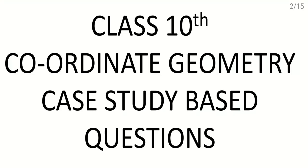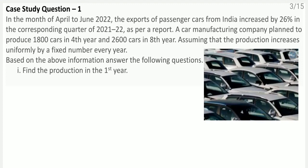Class 10th coordinate geometry case study based questions. Question number one: in the month of April to June 2022, the exports of passenger cars from India increased by 26 percent in the corresponding quarter of 2021-22. A car manufacturing company planned to produce 1800 cars in the fourth year and 2600 cars in the eighth year, assuming that the production increases uniformly by a fixed number every year.